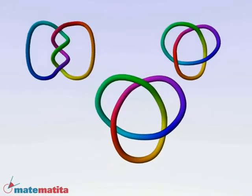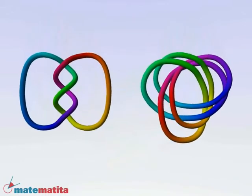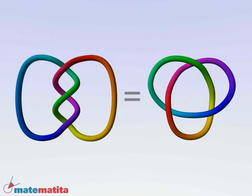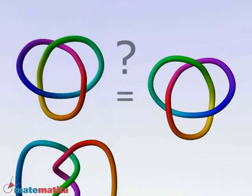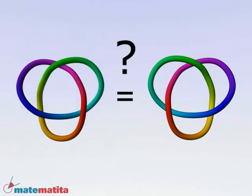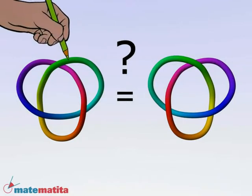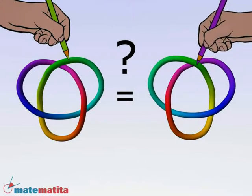This knot is called trefoil. As before, we can ask, is the trefoil the same as its mirror image? In fact, this is a very technical and difficult problem. Actually, the two knots are not the same. They are called left-hand and right-hand trefoil.